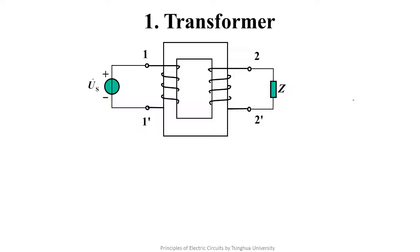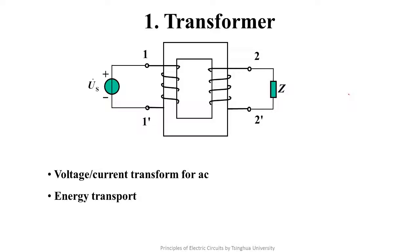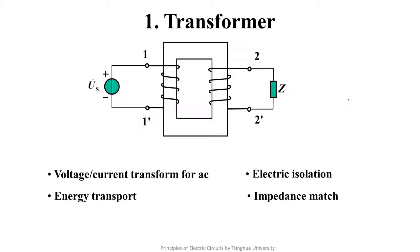The main functions of a transformer can be summarized in four aspects. First, it can realize the change of magnitude of AC voltage or current. Second, it can be used for the transmission of power or energy. Third, because there is no electrical connection between the primary side and the secondary side, it can be used as electrical isolation. Fourth, the transformer can be used as an impedance matching circuit.